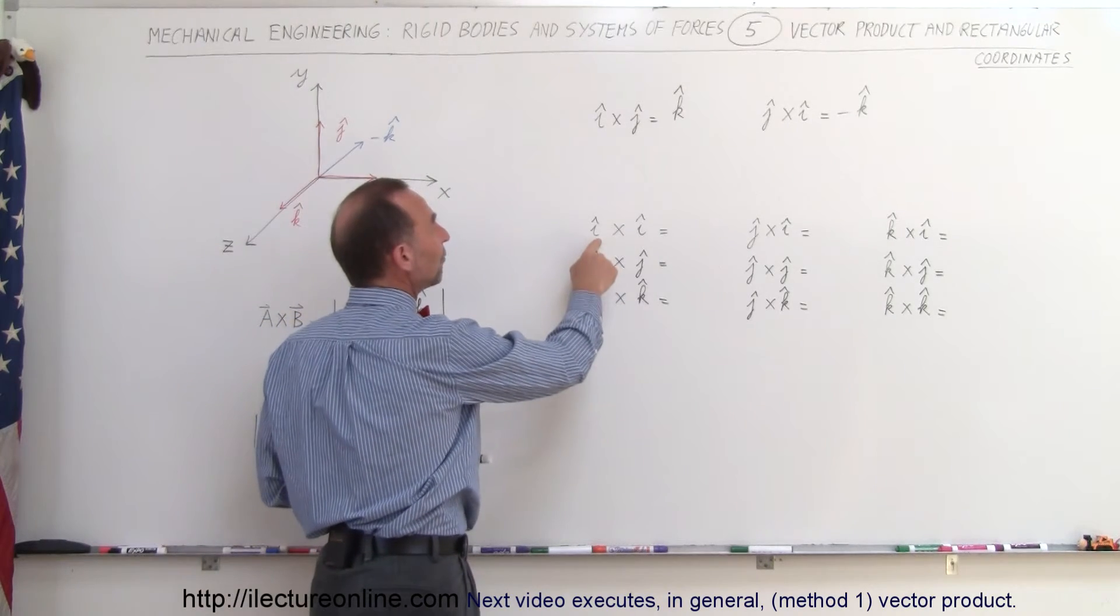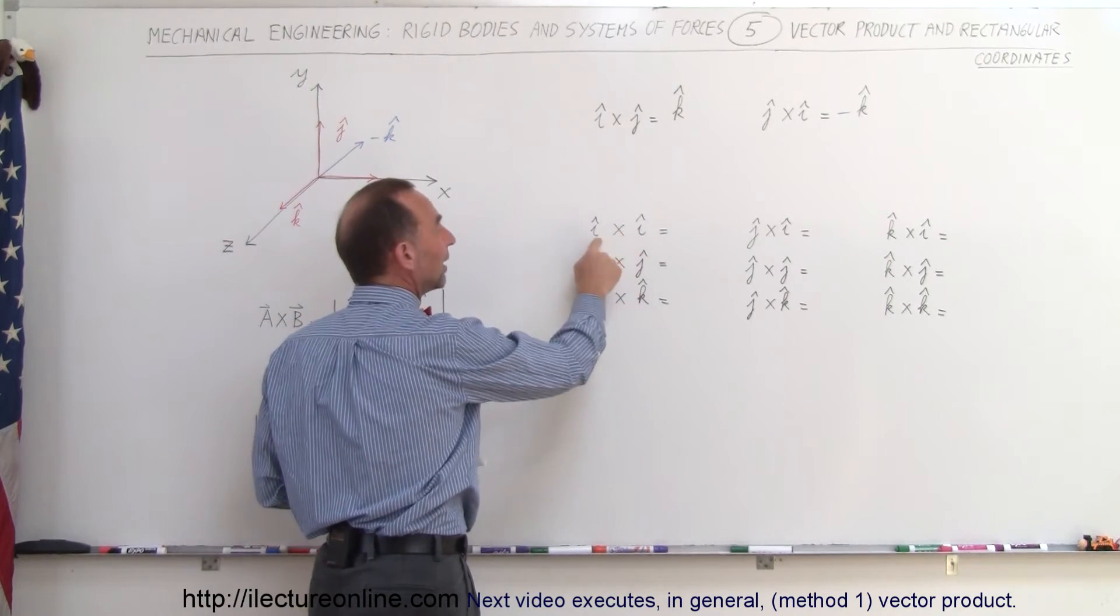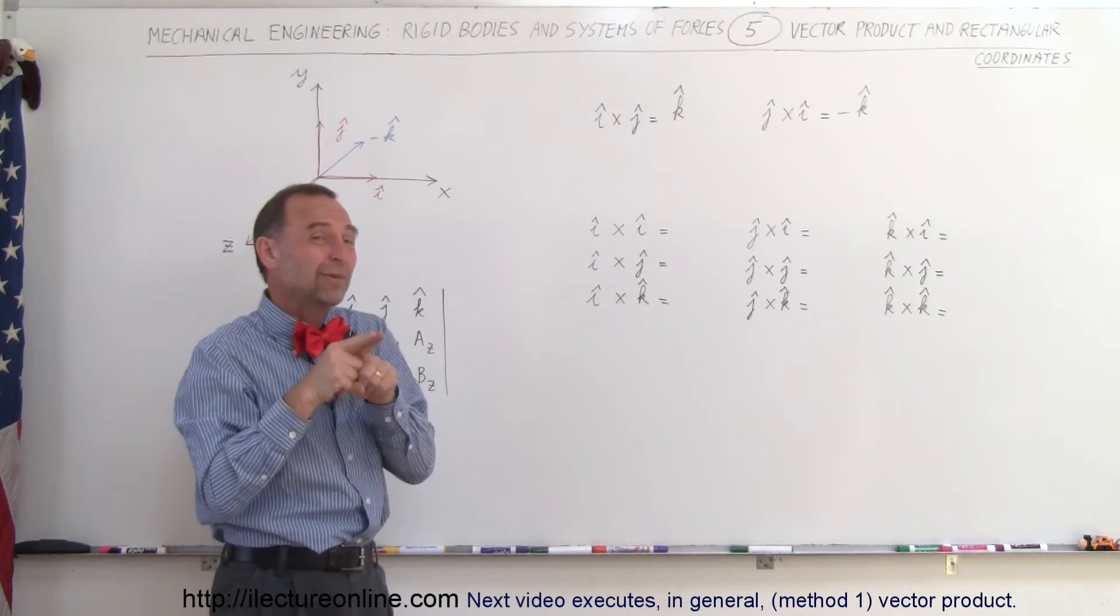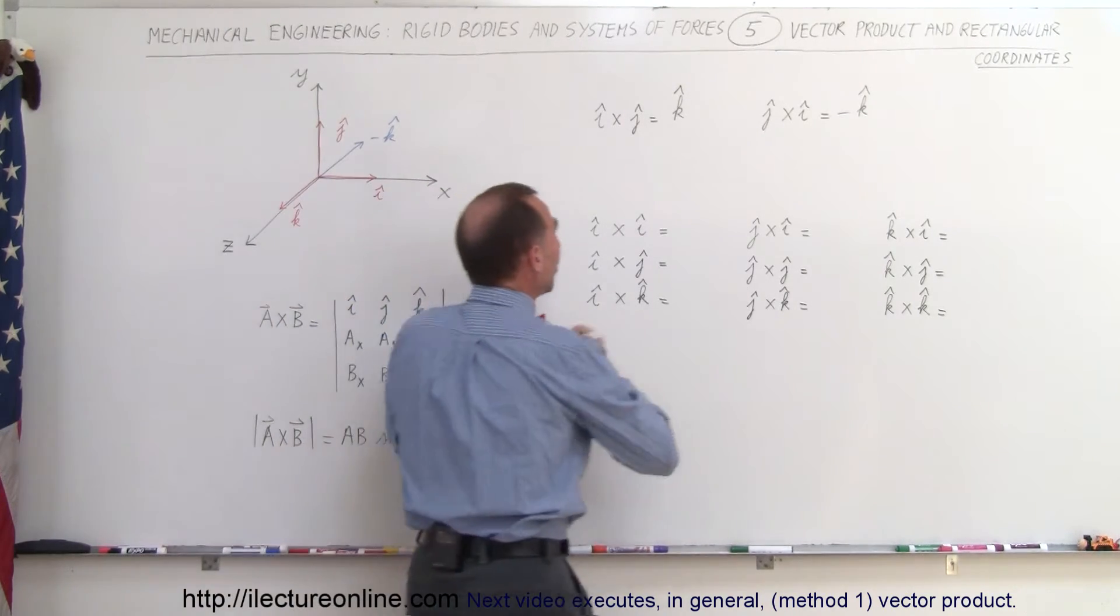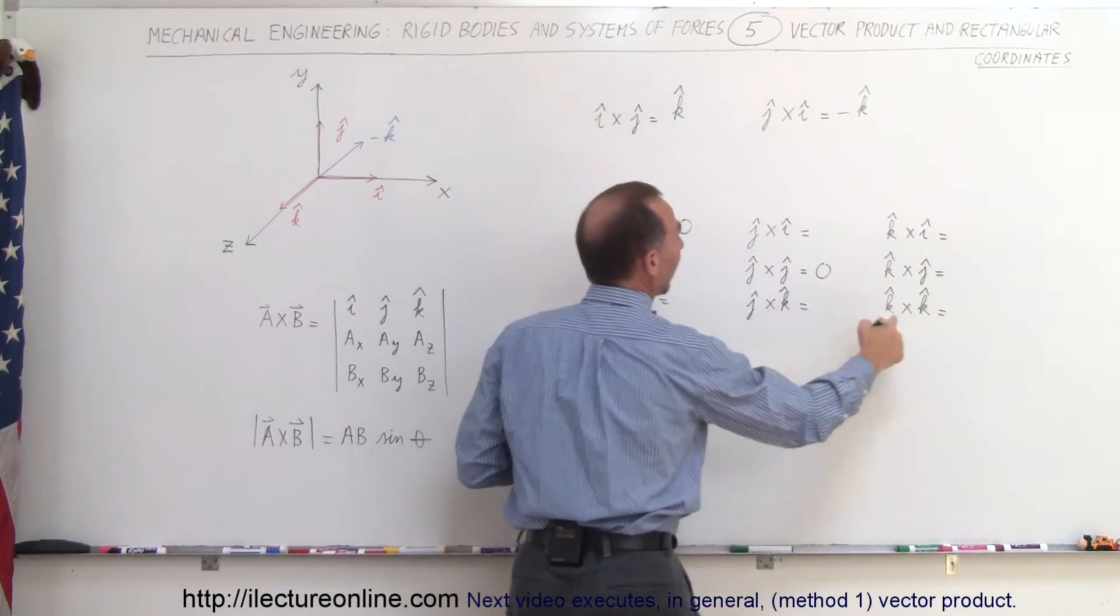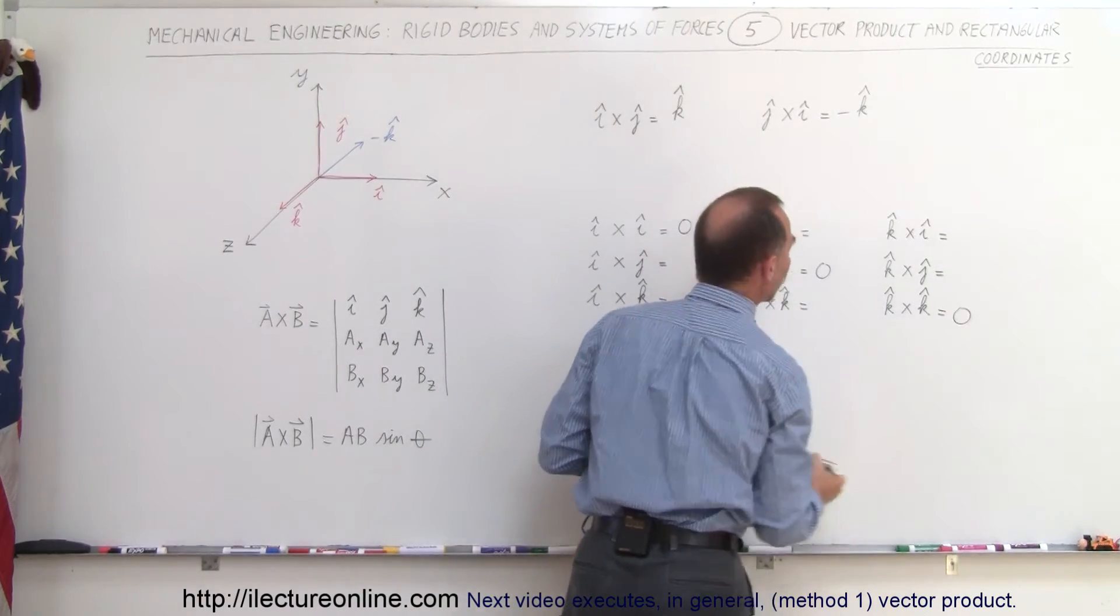So anytime you do a vector product with itself, the angle between them is 0, so therefore you always get 0. So I cross I is going to be 0, J cross J is going to be 0, and K cross K is going to be 0.